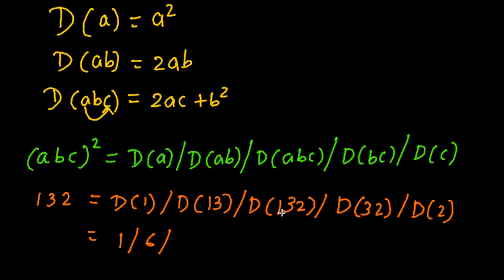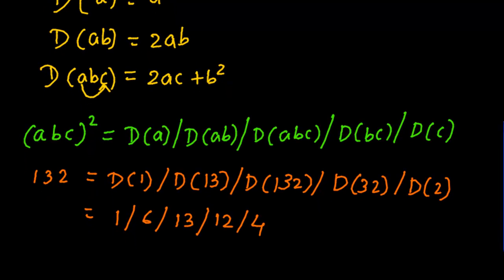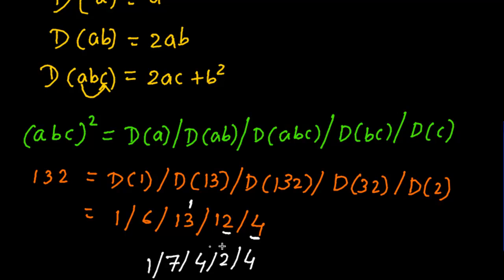Continuing: duplex of 32 = 2×3×2 = 12; duplex of 2 = 4. So the five parts are: 1, 6, 13, 12, 4. Now, retaining the rightmost digit of each part and carrying over: 4 stays; retain 2 carry 1, giving 3; carry 1 making 7; and the leading 1. So the answer is 17424.